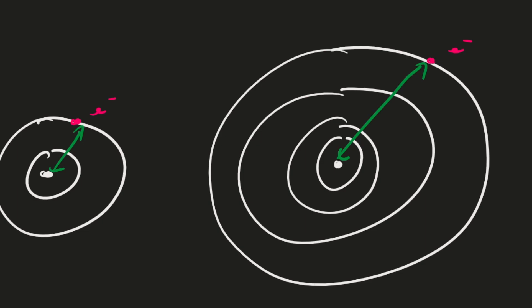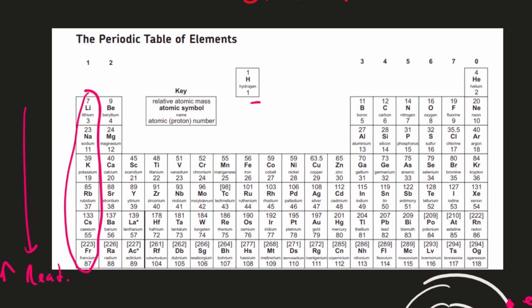Remember, Group 1 elements react by losing this electron. When you make it easier to lose that electron, the atom becomes more reactive. So as you go down the group, the period number increases, the number of shells increase, the distance between the nucleus and the outer shell electron increases, it becomes easier to lose the electron and therefore it becomes more reactive.